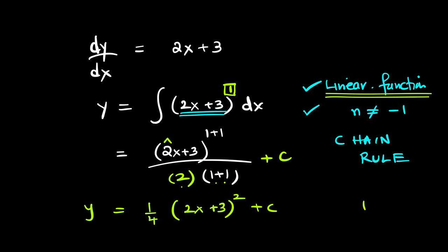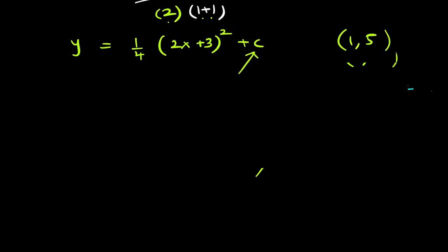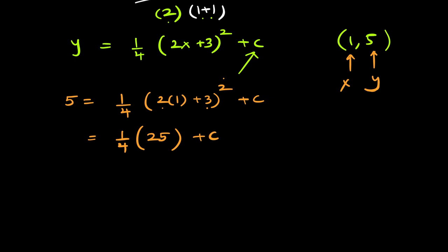Now, let's use the point on the curve (1,5) to evaluate c. So, let's plug in 5 in place of y and 1 in place of x. 5 equals 1/4(2 into 1 plus 3) the whole thing square plus c. That is 1/4(2 plus 3 is 5, 5 square is 25) plus c. That is 25 over 4 plus c. That equals to 5. 5 minus 25 over 4 equals c. Therefore, c comes out to be negative 5 over 4.